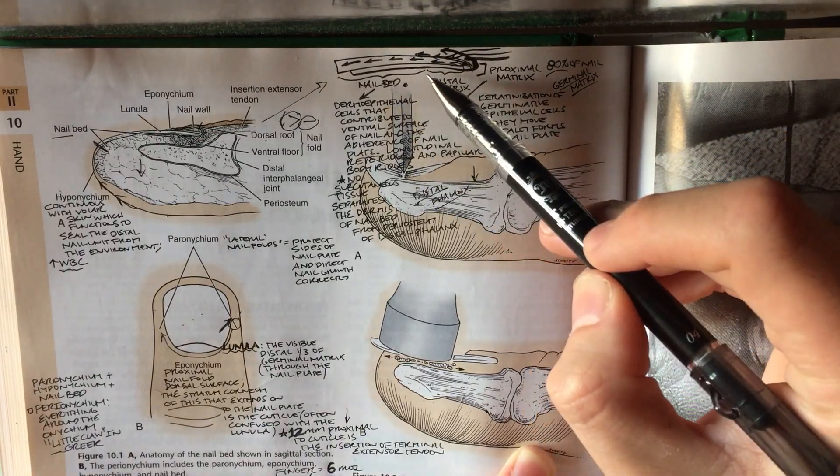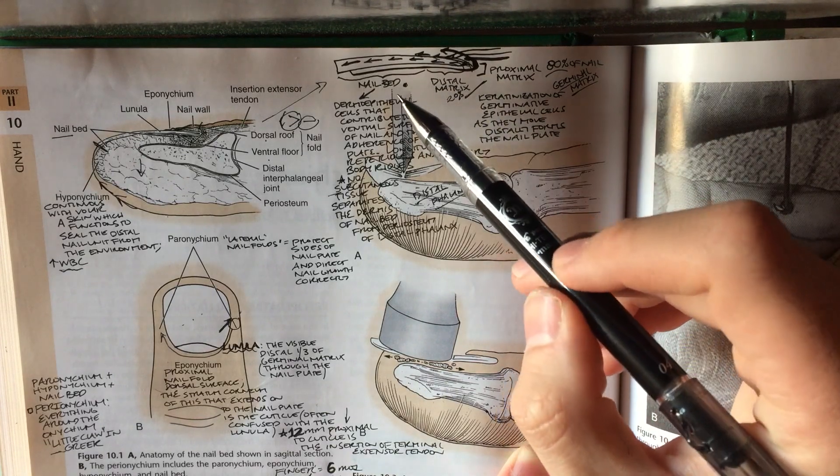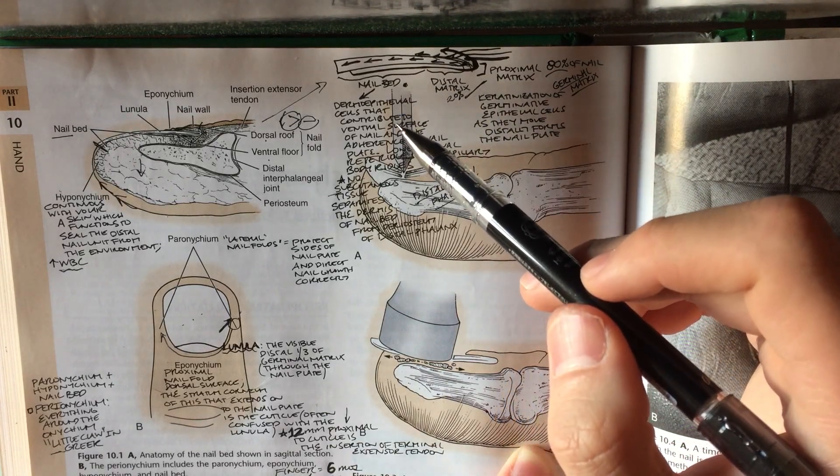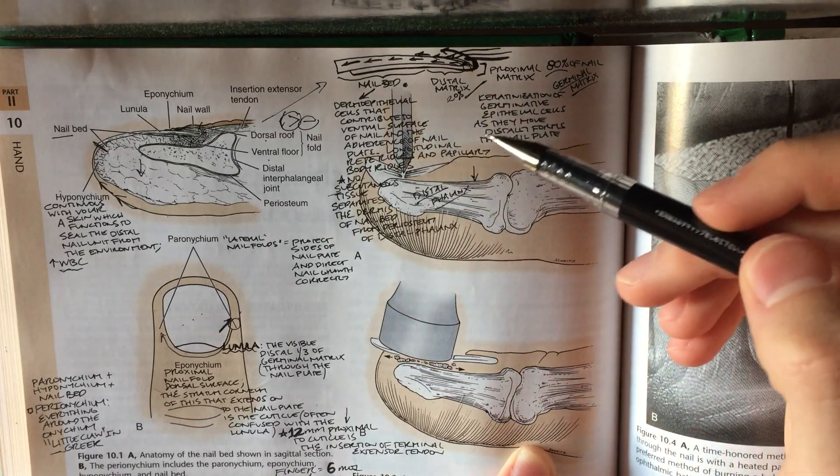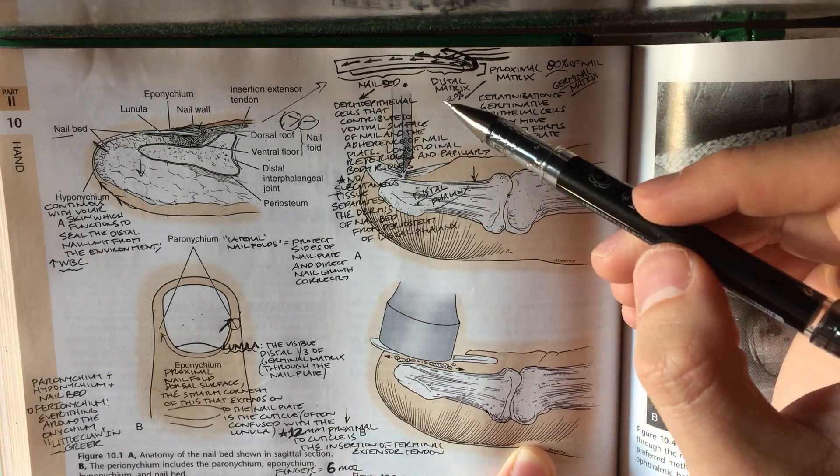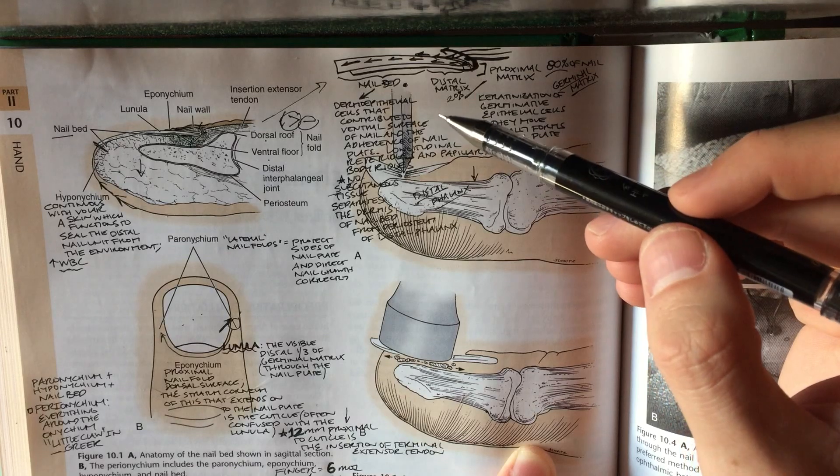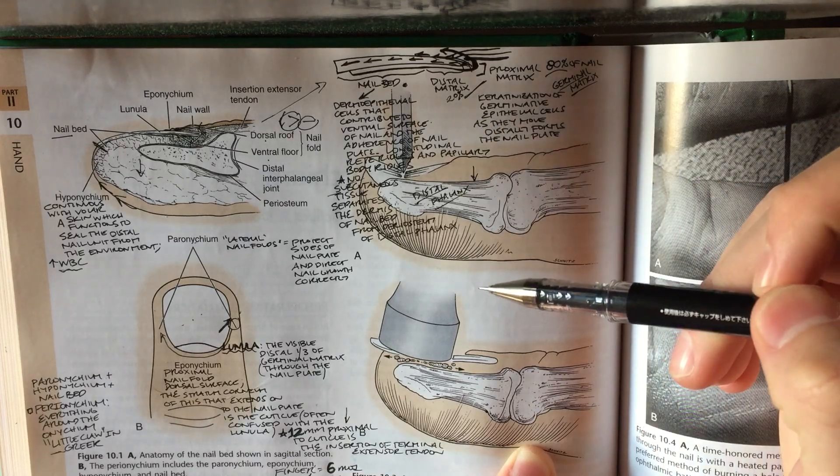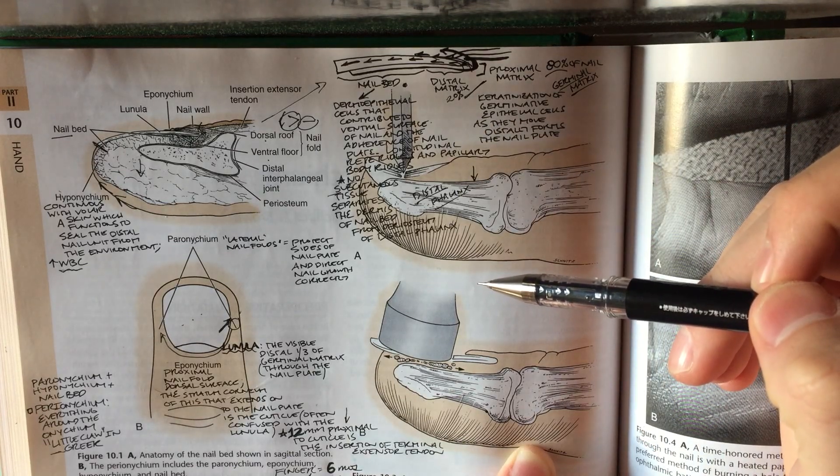So again, the nail bed, which is distal to the germinal matrix, is responsible for adherence of the nail plate and it actually provides some cells that contribute to the nail plate itself. In fancy terms, it's composed of dermal epithelial cells that contribute to the ventral surface of the nail and adherence of the nail plate.